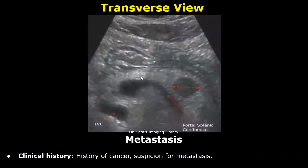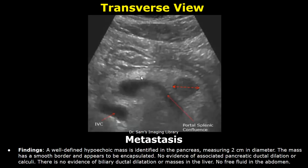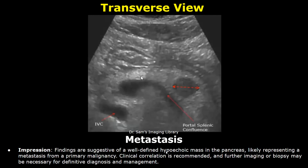Now we will look at metastasis. The clinical history was history of cancer and suspicion for metastasis. In the findings: a well-defined hypoechoic mass is identified in the pancreas, 2 centimeters in diameter, with a smooth border appearing to be encapsulated. In the impression, due to a history of cancer, this hypoechoic mass likely represents a metastasis.